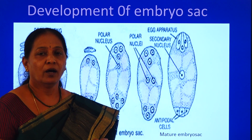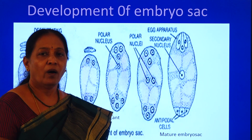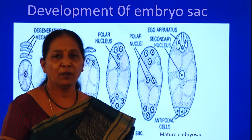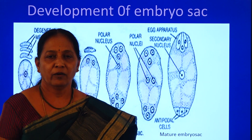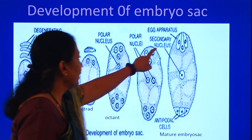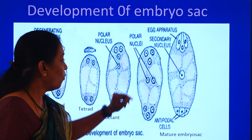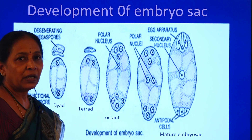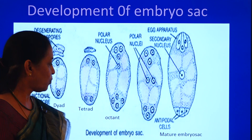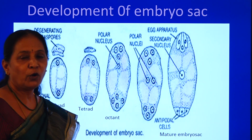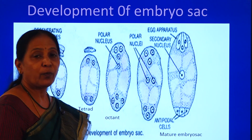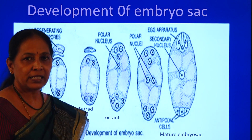When we observe the egg apparatus, we will come across two synergids and one functional egg. The remaining three nuclei present on the opposite pole — the chalazal end — get organized as antipodal cells.